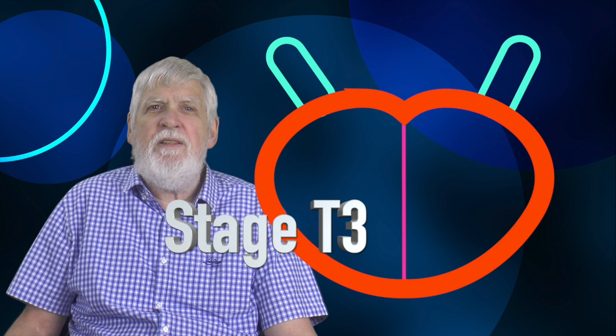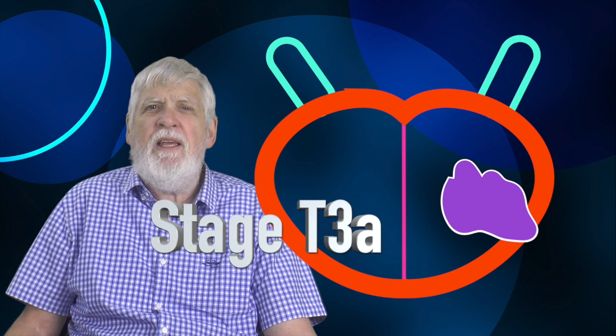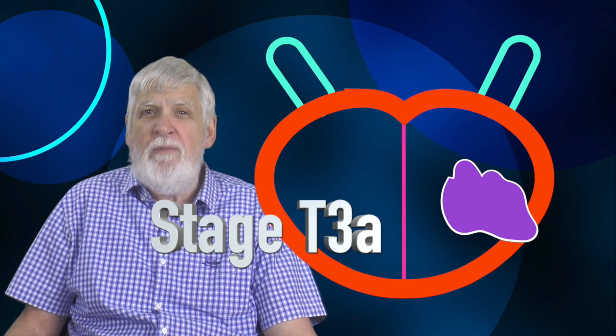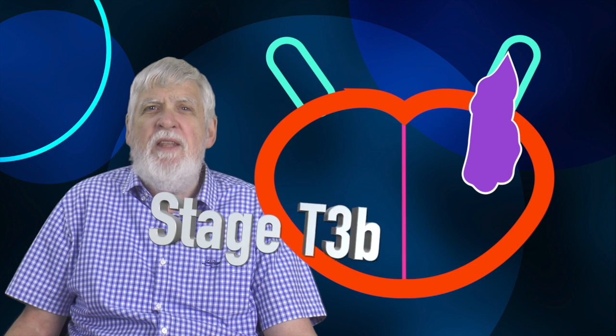Now we move to the T3 cancers. If the cancer has grown right through the capsule wall but not into any other organs, it is T3A. It has to be right through the capsule wall. Just growing into the capsule wall itself is not enough. Next, here's where our seminal vesicles come in. If the cancer has grown through the capsule wall and up into one or both the seminal vesicles, we call it T3B.